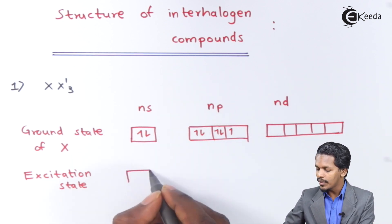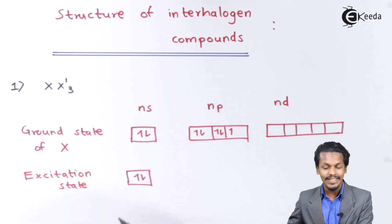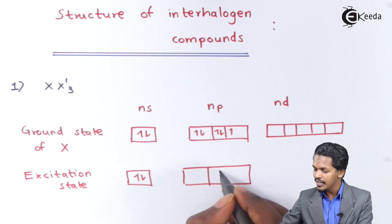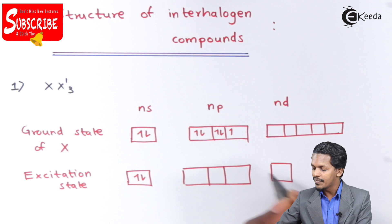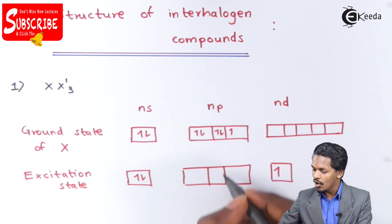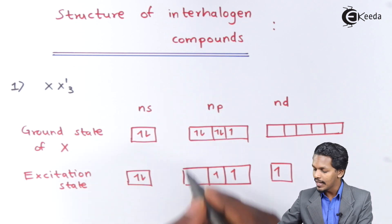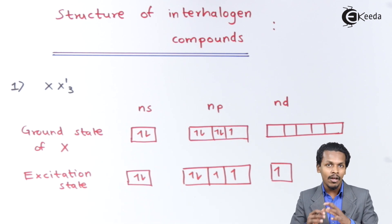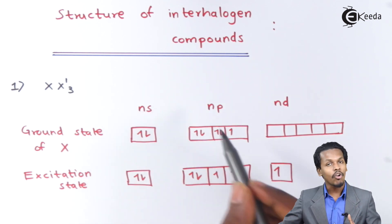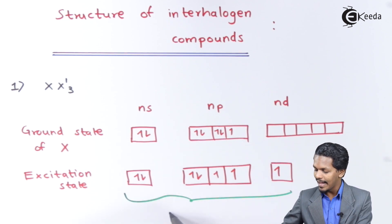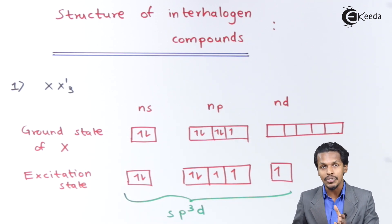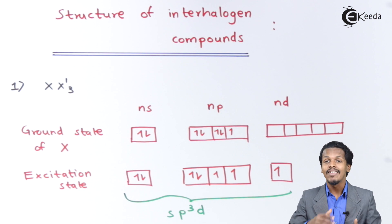After excitation, we get 2 electrons in the ns orbital, and by shifting one electron to the d orbital we obtain 3 unpaired electrons along with 2 lone pairs. Through hybridization of these orbitals, the central atom undergoes sp³d hybridization, giving a trigonal bipyramidal geometry.